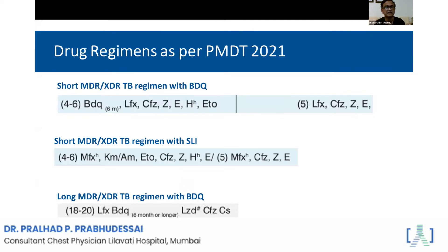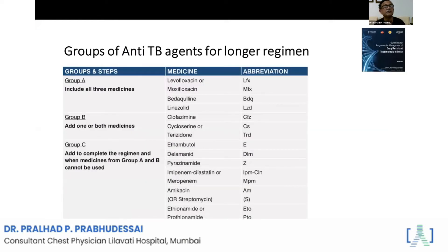If you do not have a proper diagnosis of MDR or XDR, then we cannot really use all those drugs appropriately. Long management means 18 to 20 months of therapy. It is very important that levofloxacin and bedaquiline are used in the longer regimen, and these are the drugs when you are trying to determine the regimen for a patient.